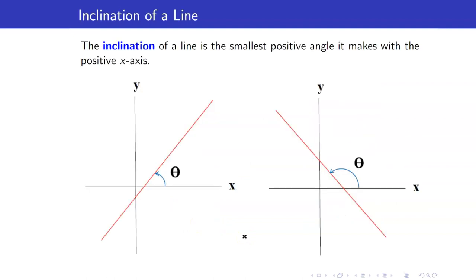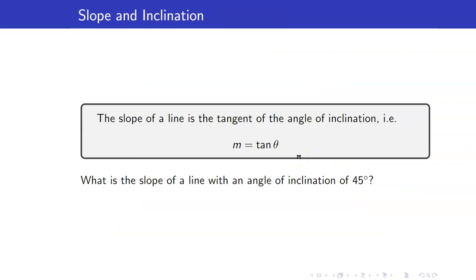What is the inclination of a line? The inclination of a line is the smallest positive angle it makes with the positive x-axis. The slope and the inclination of a line are related by the formula: the slope is equal to tangent of theta. For example, what is the slope of a line with an angle of inclination of 45 degrees? m is equal to tangent of 45 degrees, and tangent of 45 degrees is equal to 1.